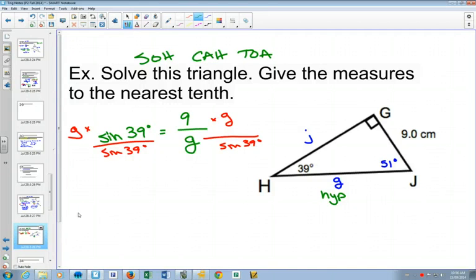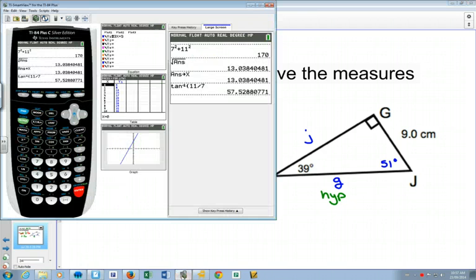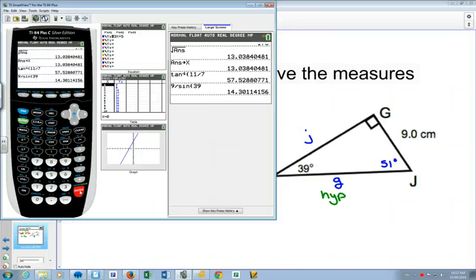Again, I'm doing that all at once. If you'd like, you can do that in two steps. That will give you G is equal to 9 over sine of 39 degrees. Plug that into your calculator. And you get 14.3.